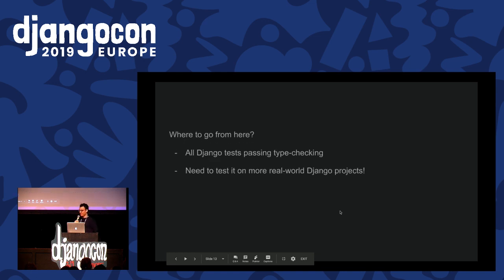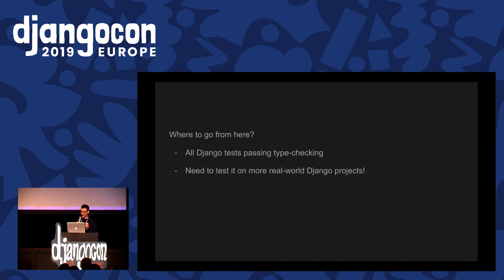Where to go from here? The project has some tests that type-check the Django tests themselves, though they don't all pass, so some things are ignored. But if more of them pass, it shows that it's pretty accurate in not giving false positives. You should try it out on your projects. Thank you.